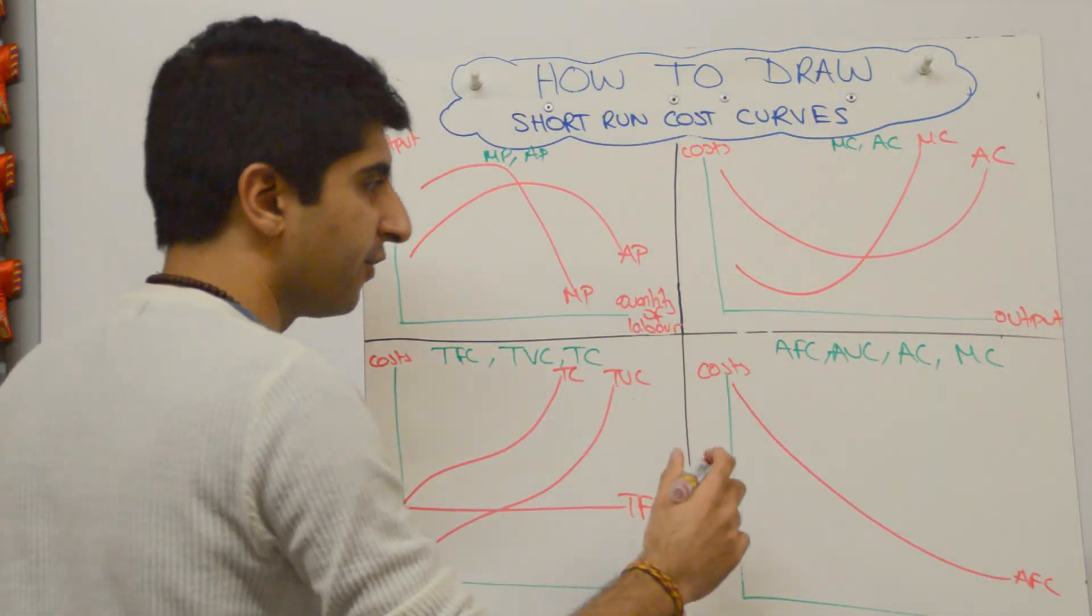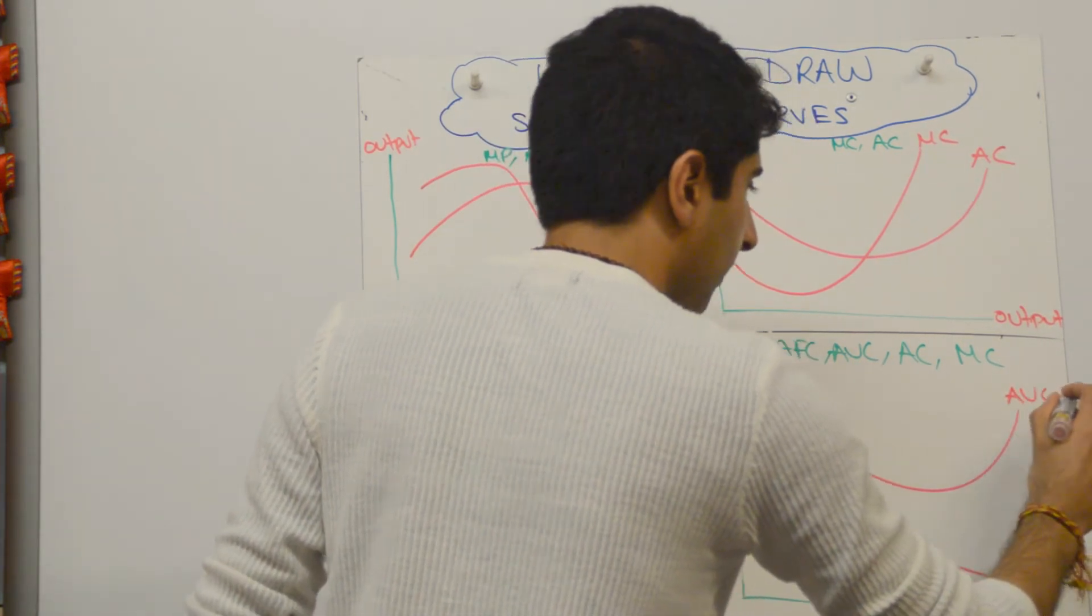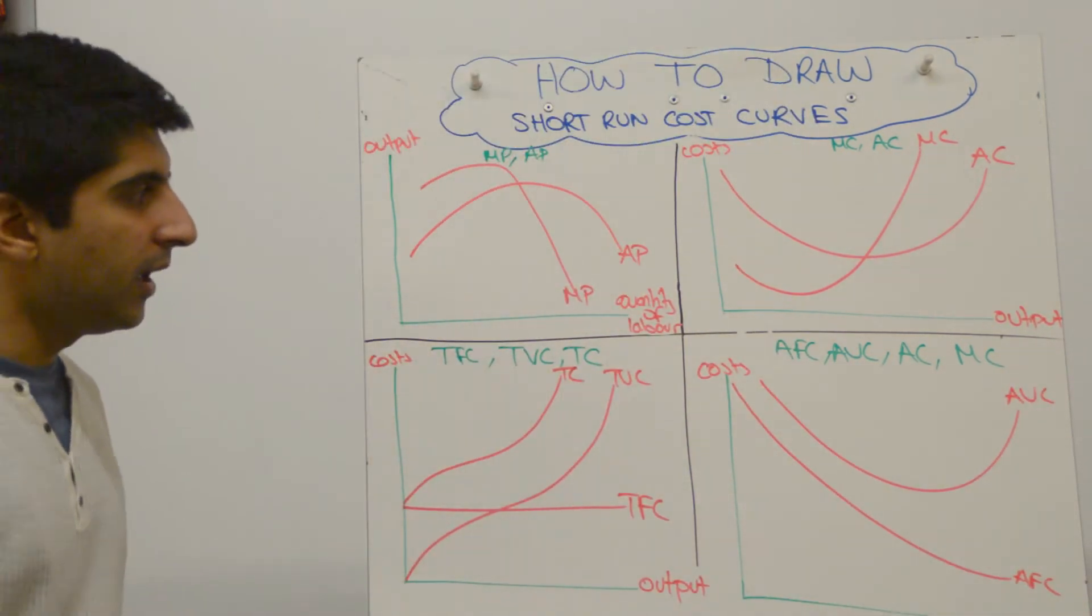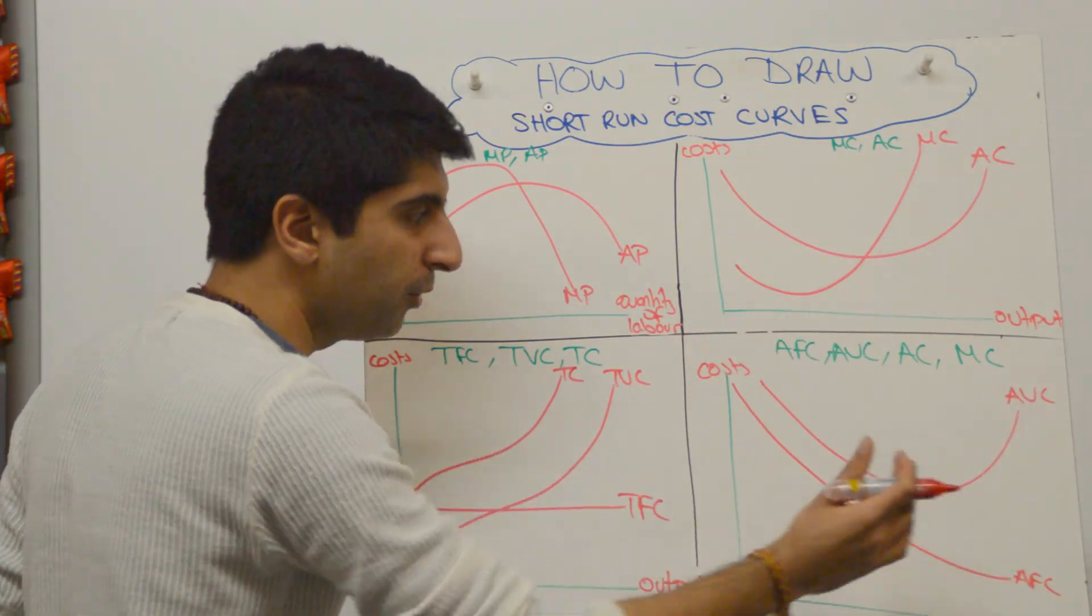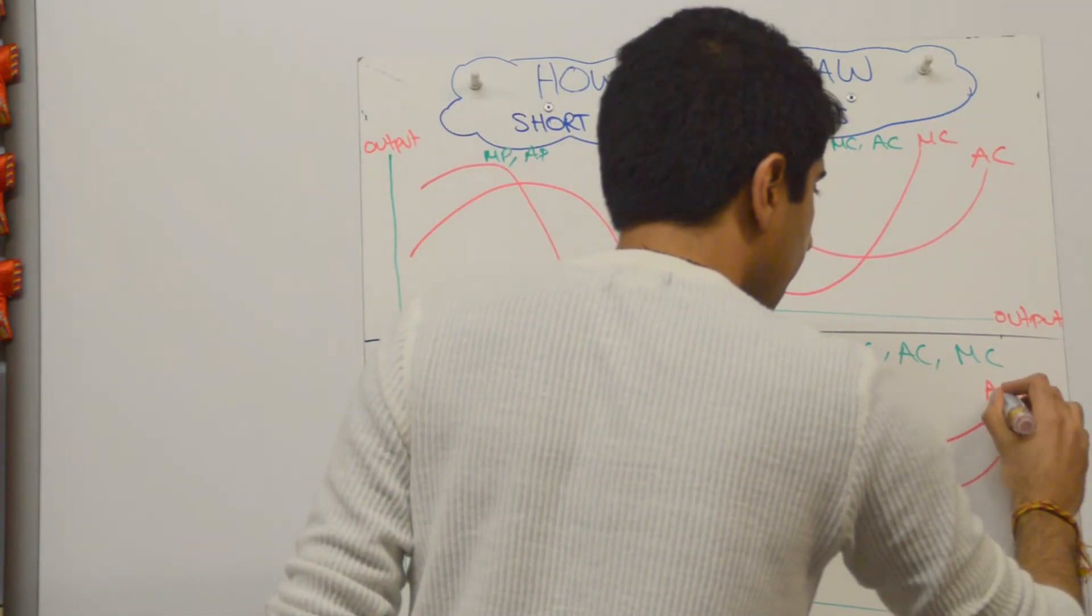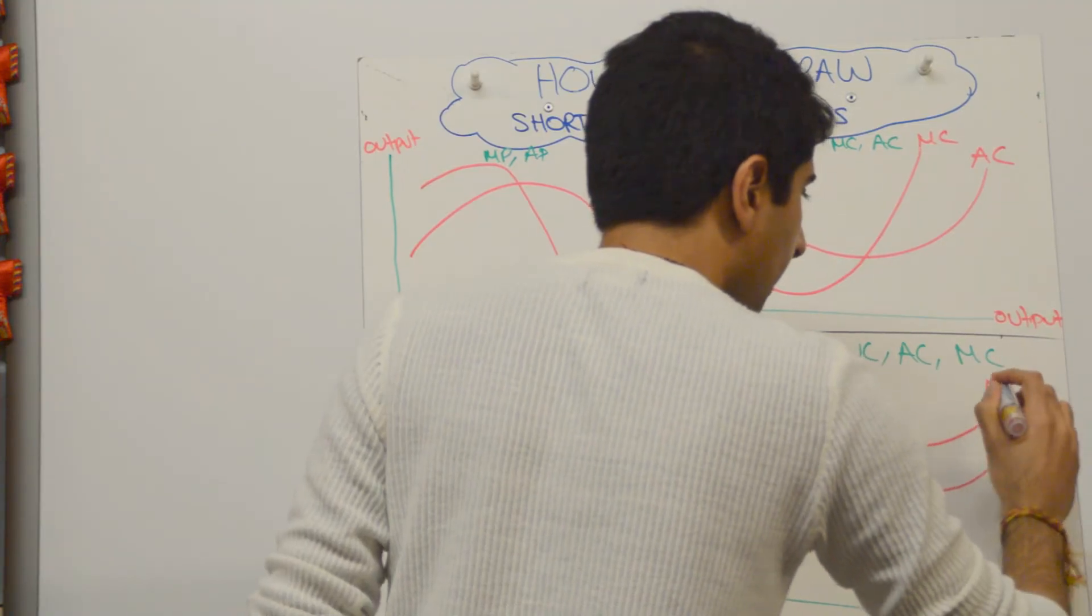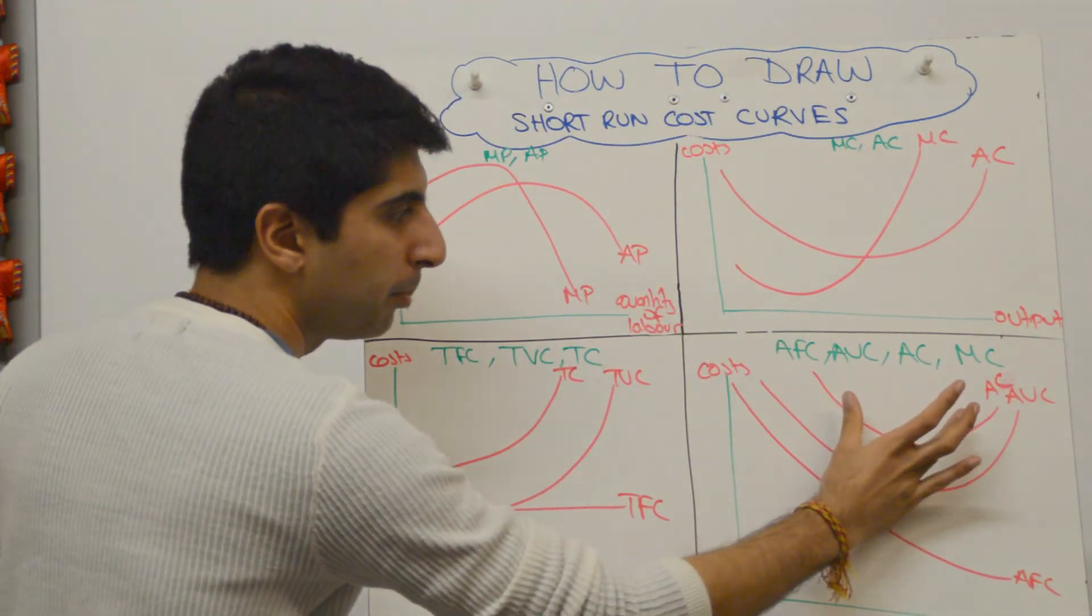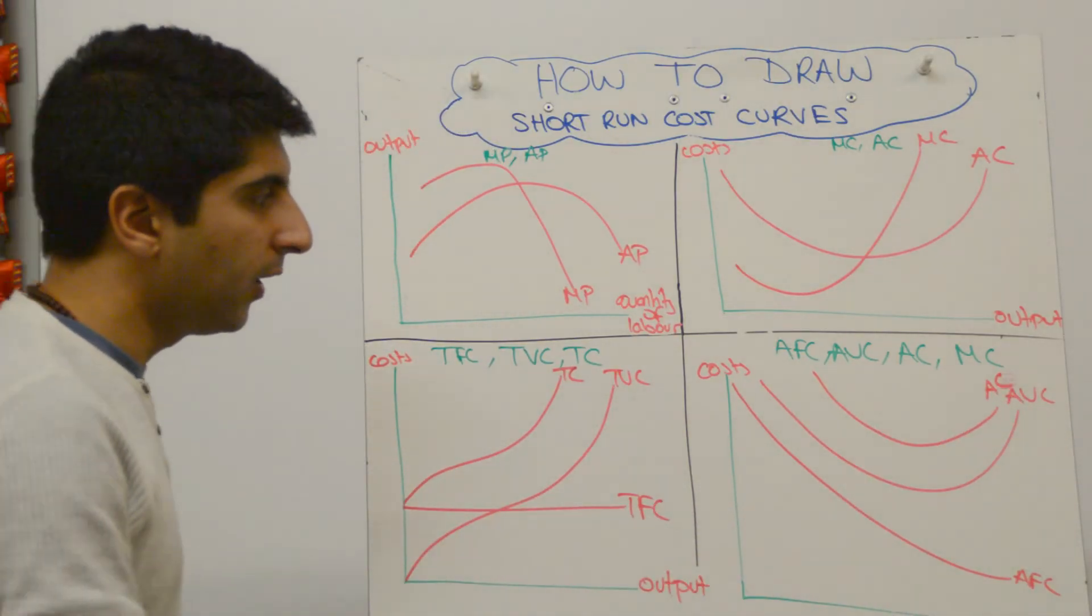Next we can draw average variable cost, which looks something like that. Okay, it's like a smiley face. Average cost is also smiley face but higher, because it's the combination of both. So higher, but the way to draw this one is that—make sure it pulls—oops, make sure when you draw it, pull it closer and closer towards the average variable cost curve like that.